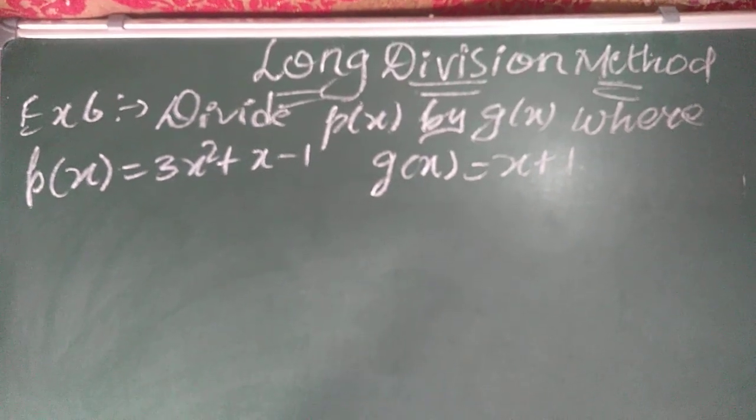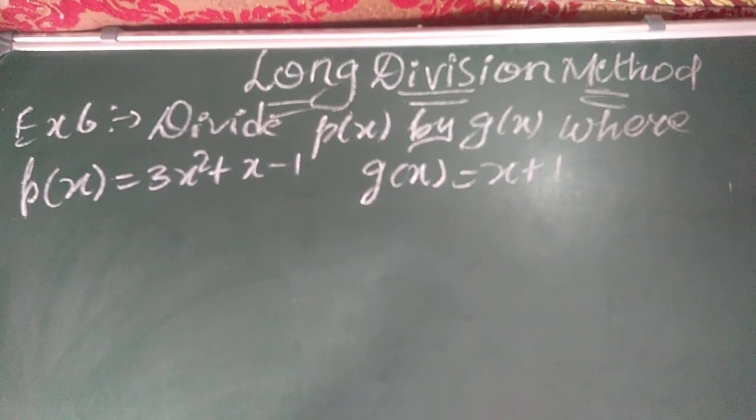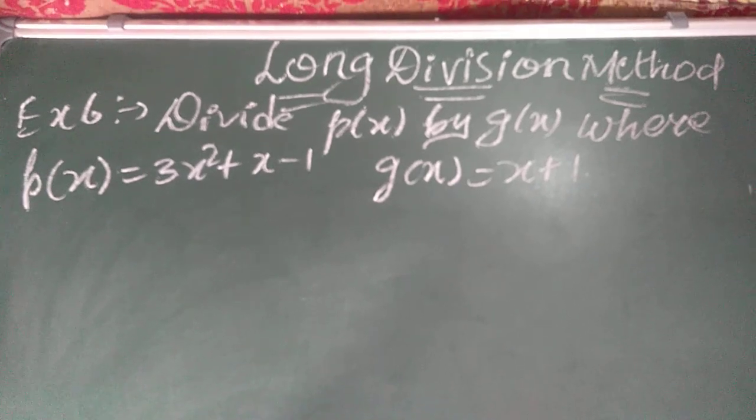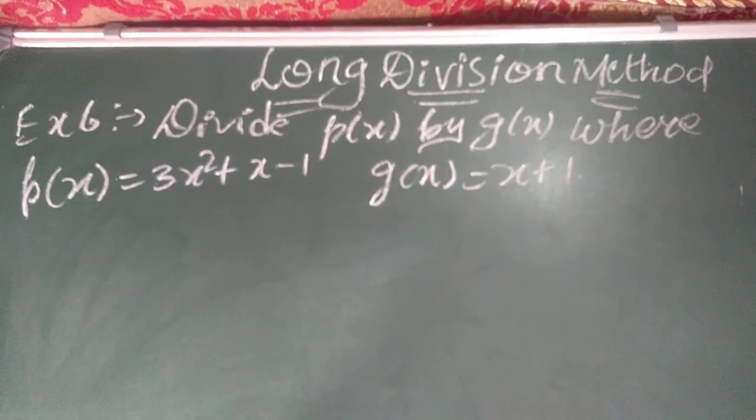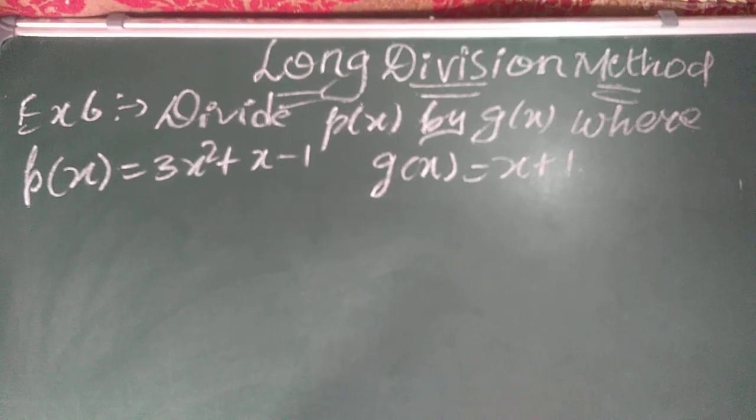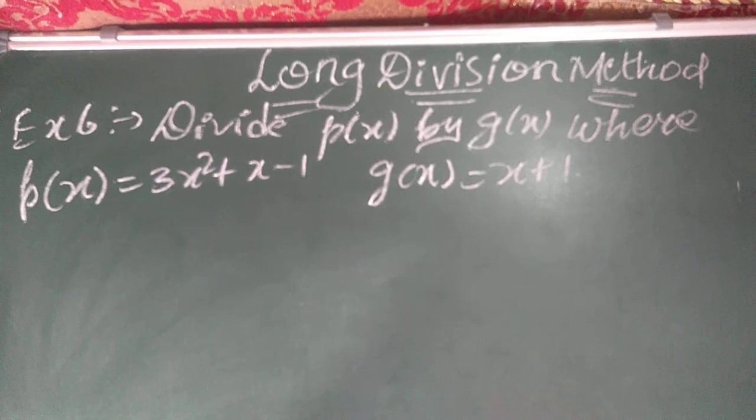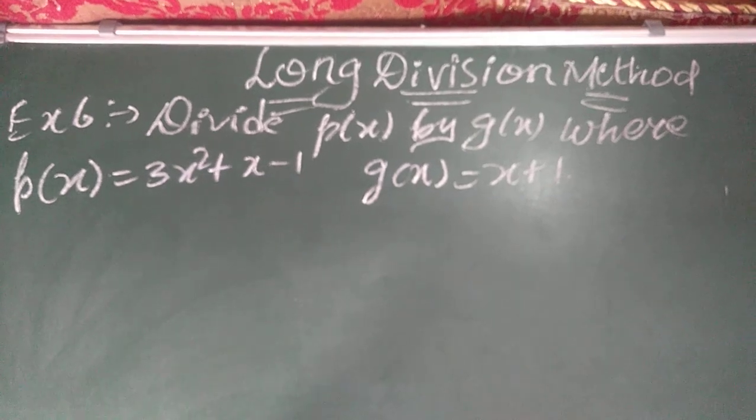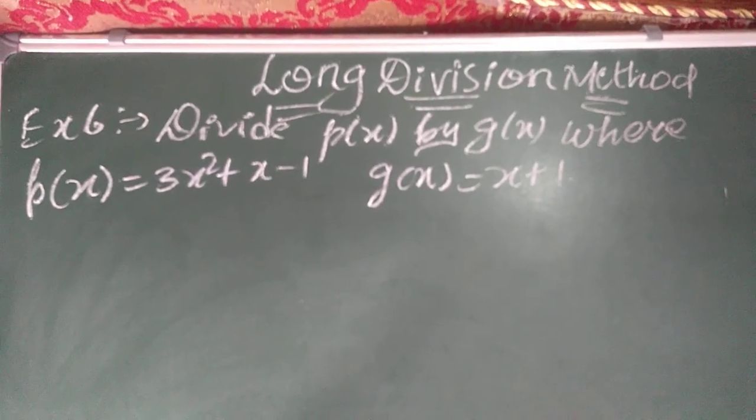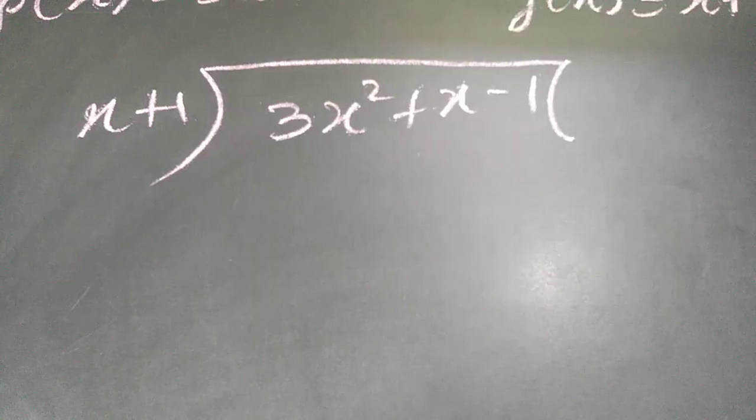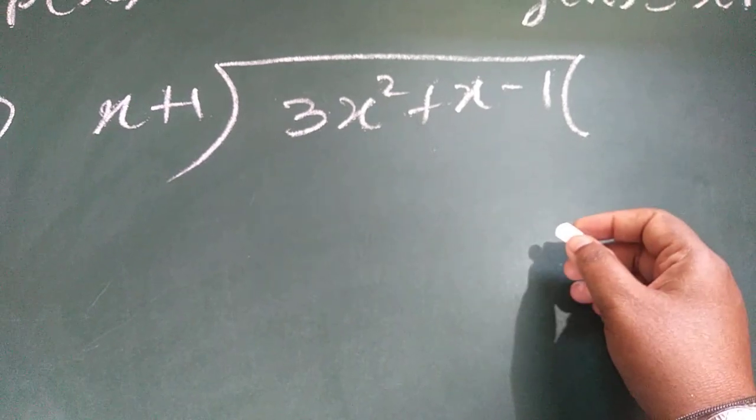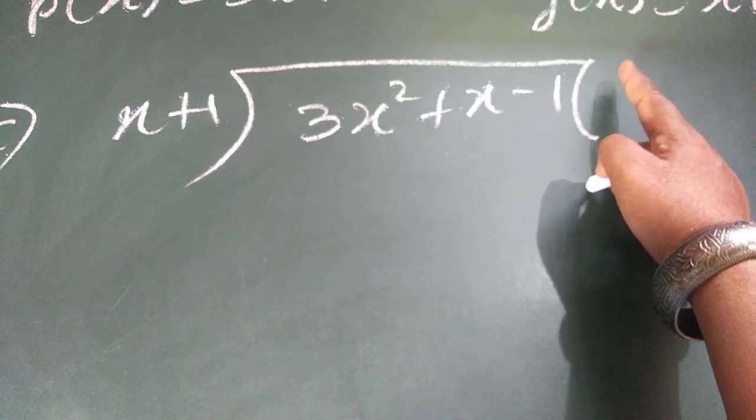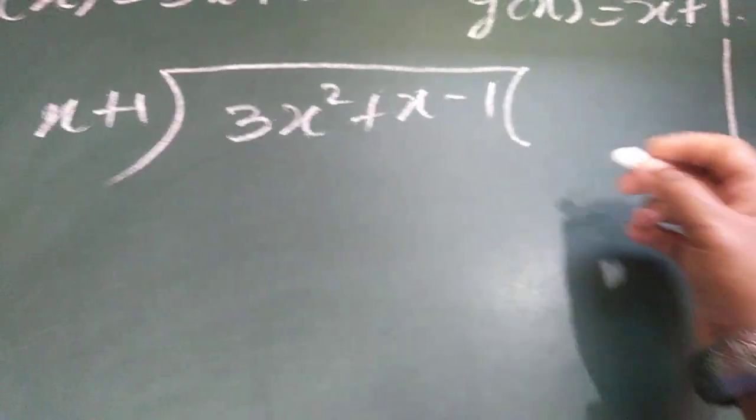So now we are going to start the new topic, that is long division method. In this method, we are going to divide where the dividend is P(x) and the divisor is G(x). Our main intention is to find the remainder of the given polynomial by dividing with another polynomial, children. Here, we can do this by long division method first and then using remainder, how to find the remainder I will explain you, children. So now we are going to start our division. First, what we are going to take in the quotient is very important, children. How to select the quotient? I will explain you how to select it.